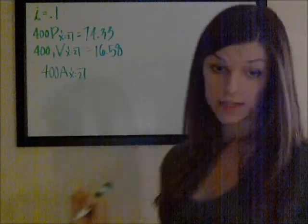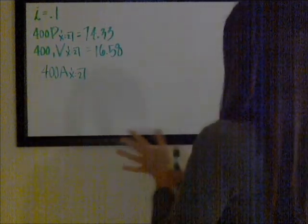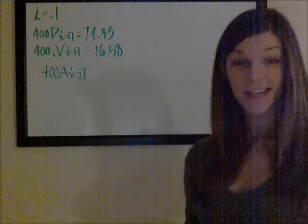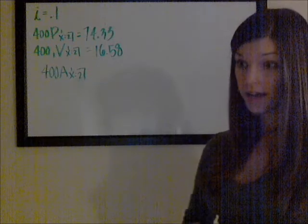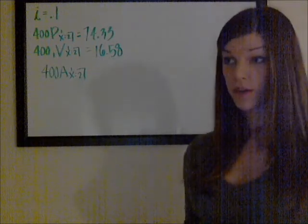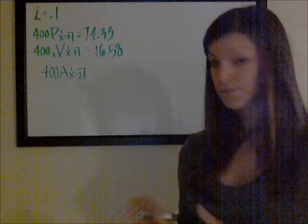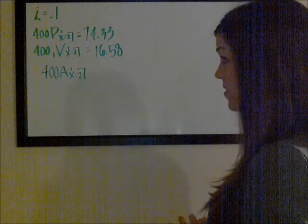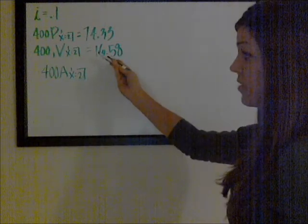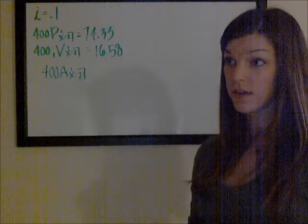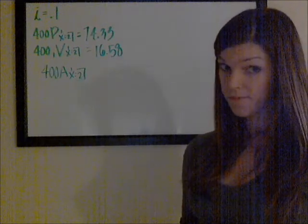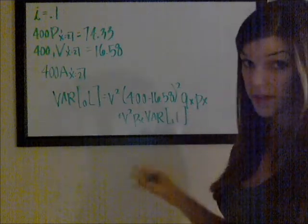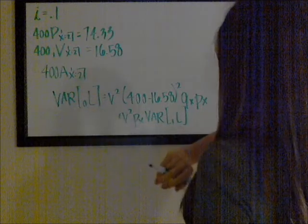We want to calculate the variance of the loss at issue. My first step here was to recognize — besides the fact that this is in my section on Hattendorf's Theorem — that you would want to use it because essentially Hattendorf's Theorem is just a recursion formula for the variance of the loss random variable. We have the reserve at time 1 and the premium, so we can probably calculate the variance of the loss random variable at time 1, and then use that recursive formula to get the variance at time 0.